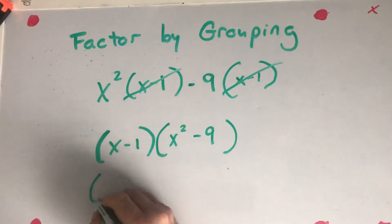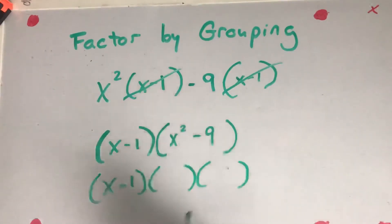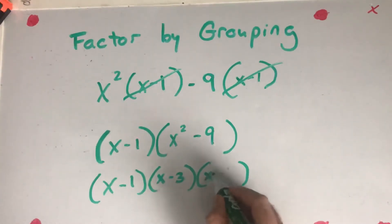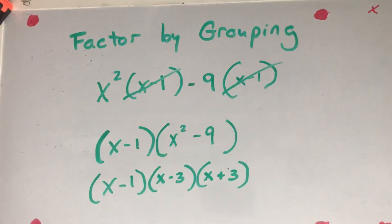If you'll remember, I put the (x minus 1) there. Now, x squared minus 9, if I factor it, is (x minus 3)(x plus 3), because this is a difference of two squares.